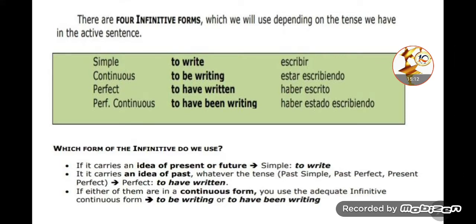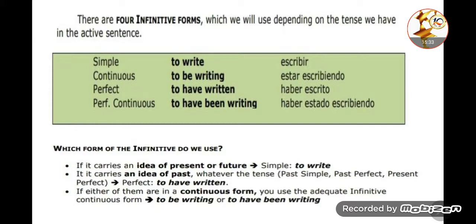We've finished with the first part. Now let's work on the 'to infinitive' in the second part. We have four infinitive forms, and we choose which one to use depending on the tense in the active sentence. For example, if the tense is simple — 'to write'. If it's continuous, we use 'to be writing'.